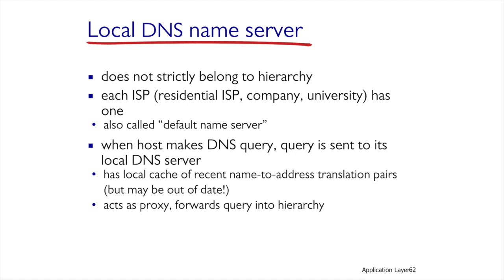When a client sends a query to search for an IP, it first sends it to the local server. The local server may have the address in local cache due to previous requests from the same client or other clients referring to that server. So the server will provide the address directly to the client and save a search in the hierarchical tree. If the local server has no translation to the address the client requested, the local server serves as a proxy and searches through the hierarchical tree. When the server receives the address, it will save it in its cache for the next times, reset the time to live variable, and send it to the client.